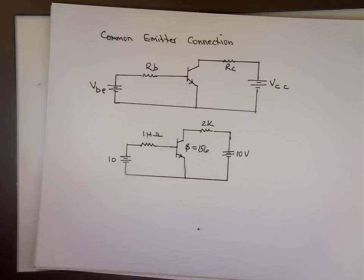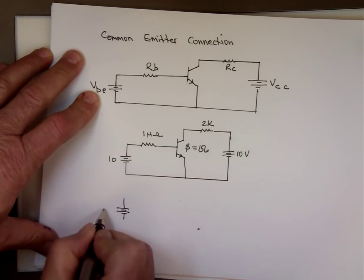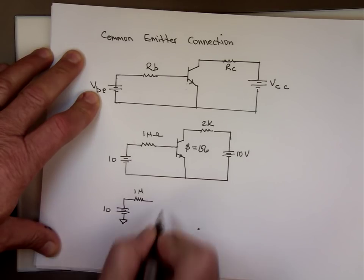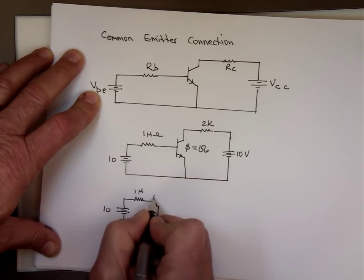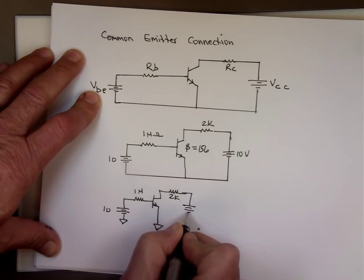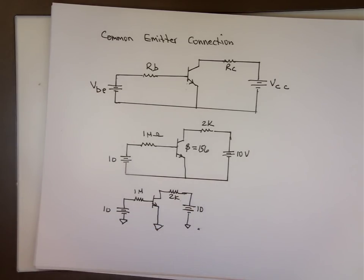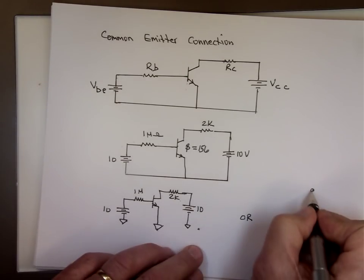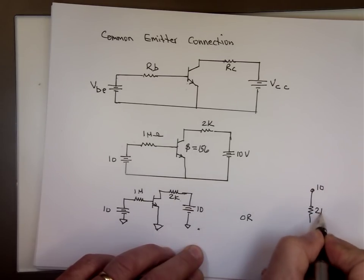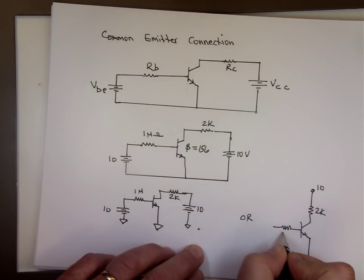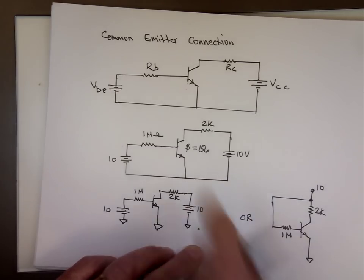For current to flow through the base you need VBE to be 0.7 volts for a silicon transistor. Since 10 volts is much larger than 0.7, the transistor is on. To calculate I sub B: it's the supply voltage minus VBE divided by R sub B, which is 10 minus 0.7 over 1 megaohm, giving 9.3 over 1 million, which equals 9.3 microamps.